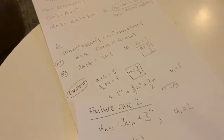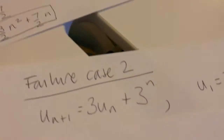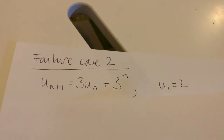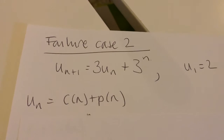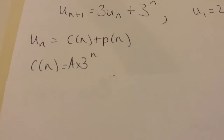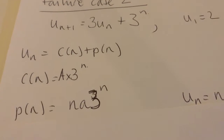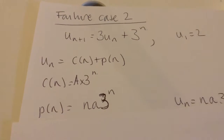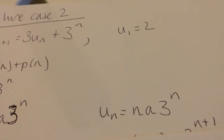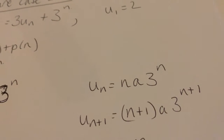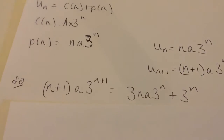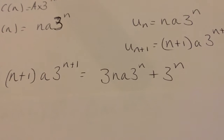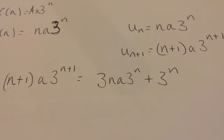Here's how you solve failure case 2. We had our exponential particular solution. You go at it as normal — complementary function plus particular solution. The complementary function is A times 3 to the power n. But instead of the particular solution being a times 3 to the power n, because it's a failure case, you multiply that particular solution by n. Then u_{n+1} replaces n with n+1. Putting that into the recurrence relation gives u_{n+1} equals 3u_n plus 3 to the n.